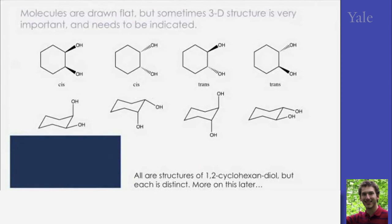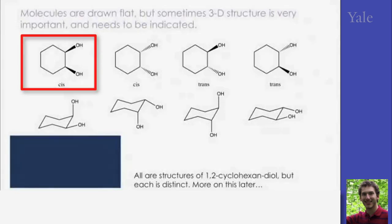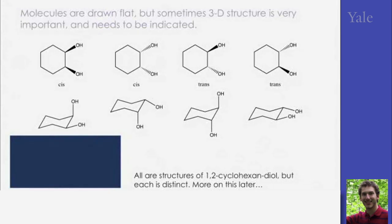One note on drawing the structures. They're usually drawn flat, but sometimes it's necessary to demonstrate some relative orientation in 3D space. And for this, we use wedges and dashed bonds. The wedges indicate that whatever is on the wider end of the wedge is coming out. With the dashes, it's a little counterintuitive, but again, the substituent on the wide end of the bond is going back.